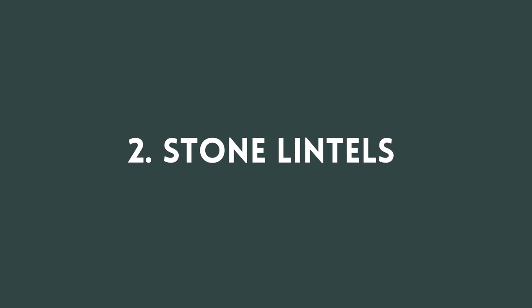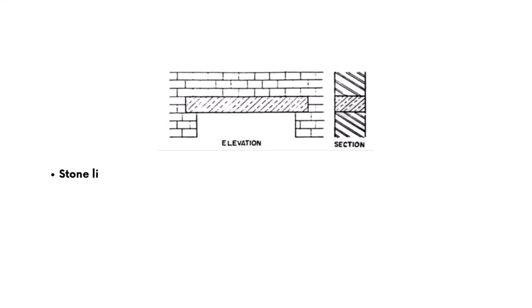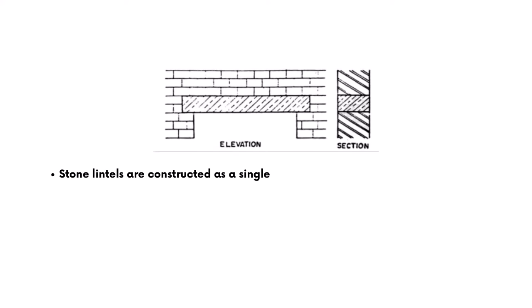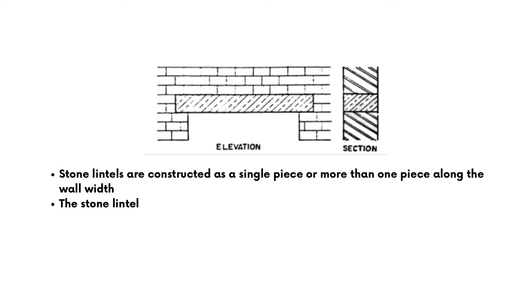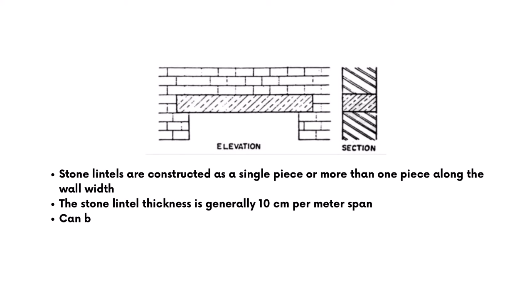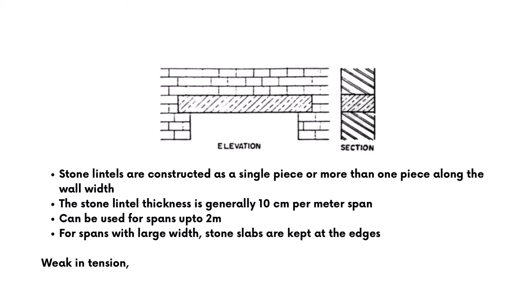Stone lintel is the most common type of lintel as stone material is available abundantly. It consists of a simple stone slab of large thickness, provided over openings in brick walls or stone walls. A dressed stone, if used as a lintel, enhances the architectural beauty of the surface. Stone lintels are constructed as a single piece or more than one piece along the wall width. The thickness is generally 10 cm per meter span and can be used for spans up to 2 meters. For spans with large width, stone slabs are kept at the edges. Stone lintels are weak in tension and crack under vibration, and are not suitable for areas with high shock waves.